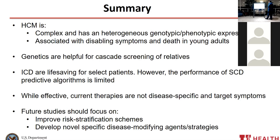In summary: HCM is complex with heterogeneous genotype-phenotype expression. It is associated with disabling symptoms and sudden death in young adults. Genetics can be helpful for cascade screening of relatives. ICDs are life-saving for select patients; however, our predictive algorithms remain very limited. Current effective therapies are not disease-specific and target symptoms. Future studies should focus on improving risk stratification schemes and developing novel disease-specific disease-modifying agents for this condition.